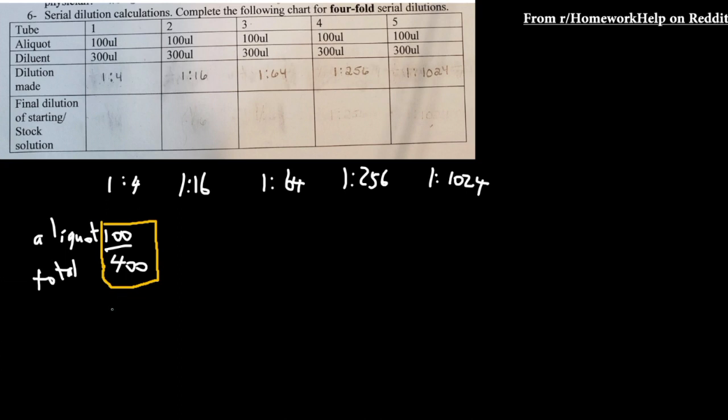Hello, so you're trying to do serial dilutions calculations, and let's see what we have. So far, it's asking us that you have to put in 100 aliquot, so that's the original solution, with 300 microliters of your dilutant.